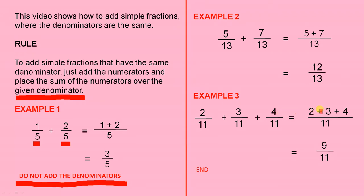So 2 plus 3 plus 4. That's what the rule says. When you add the numerators together you get 9. The denominator stays at 11. So the answer is 9 over 11.